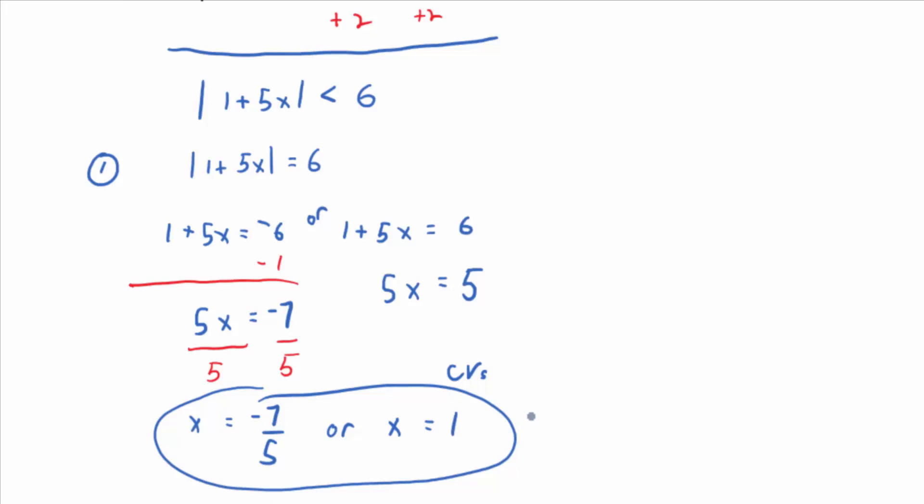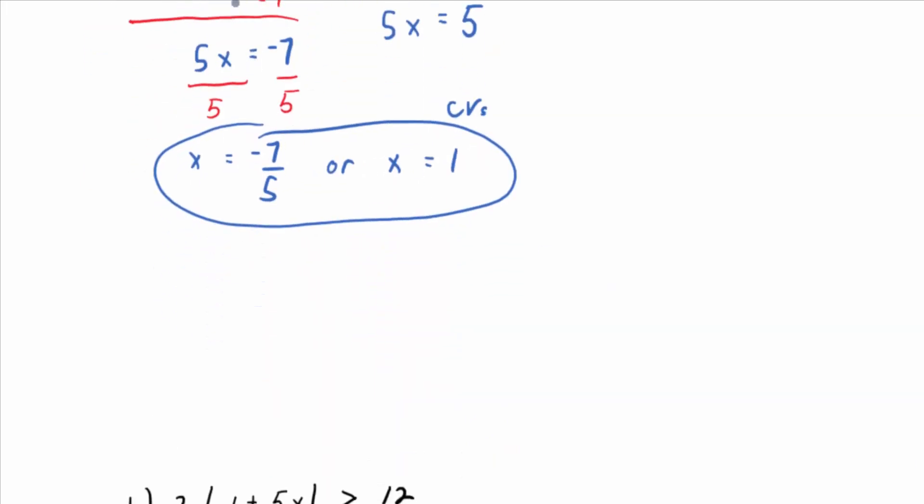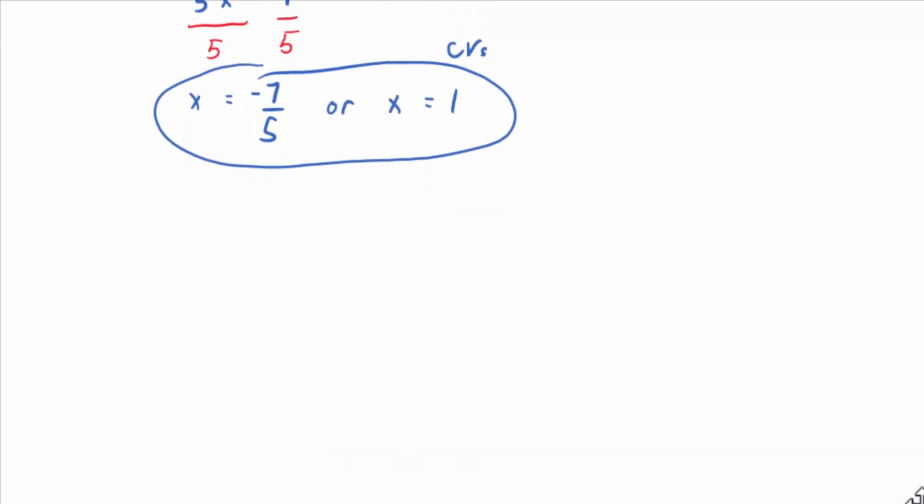Then what do we do with those critical values? On a number line let's graph those critical values. This would be step 2. So negative 7 fifths and 1.